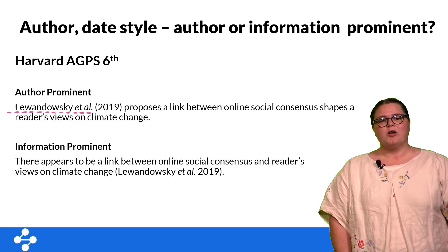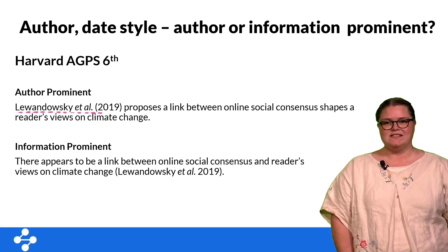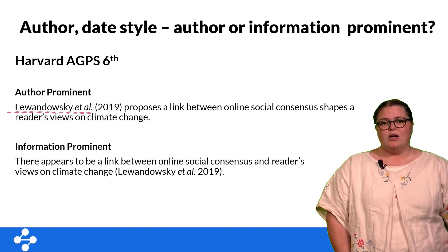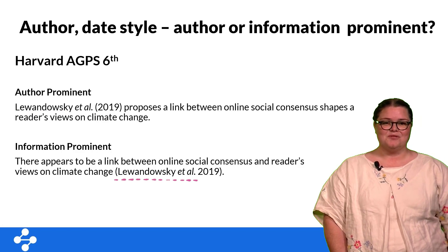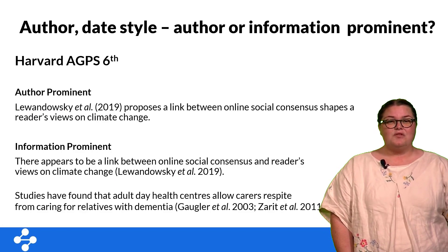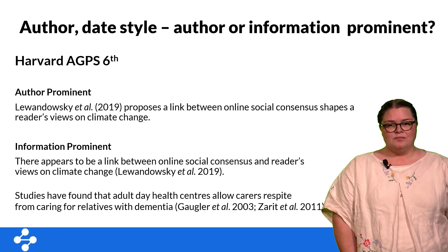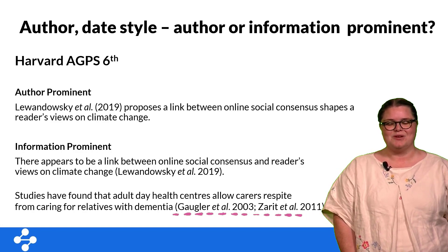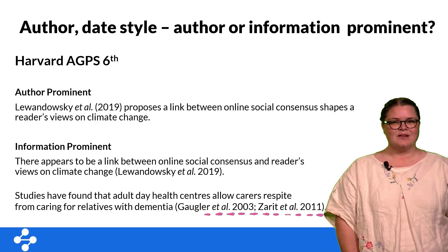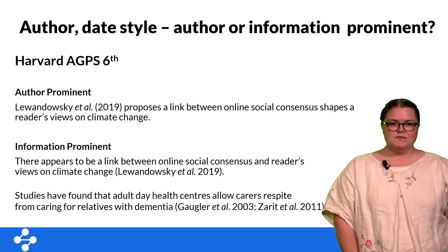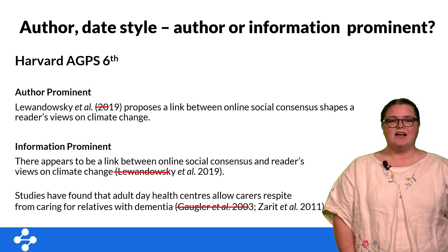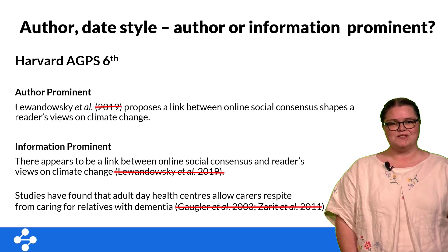In an author-prominent citation, the publication year is placed in brackets next to the author's name, while in an information-prominent citation the reference is placed next to the information used. If we're referencing the whole sentence, the reference will likely be placed at the end. You can even use more than one source to support the information in your sentence. The position of the reference within the sentence is important and may also impact the grammar, so to determine this, read the sentence out loud ignoring the information inside the brackets.